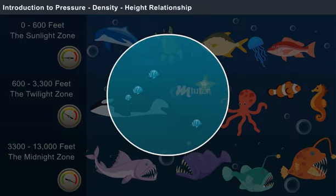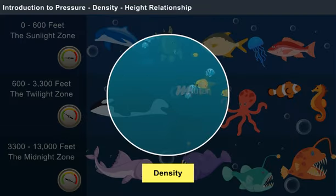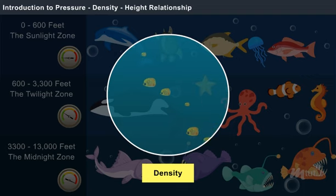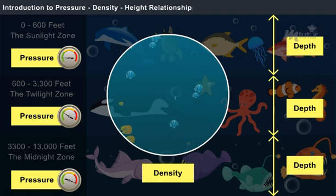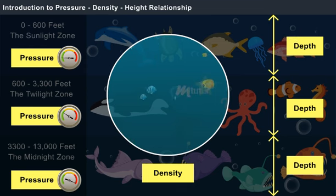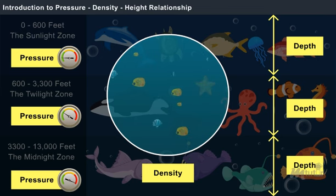Also, the speed of the sea creatures inside the sea depends on the density of the seawater. Hence, the travel speed of any body in a fluid medium depends on the density of the fluid, and the body experiences different levels of pressure at different depths.